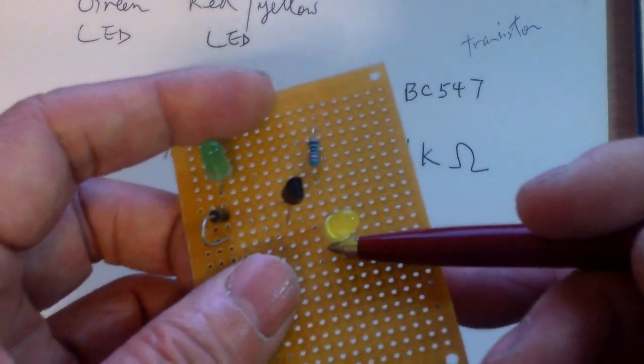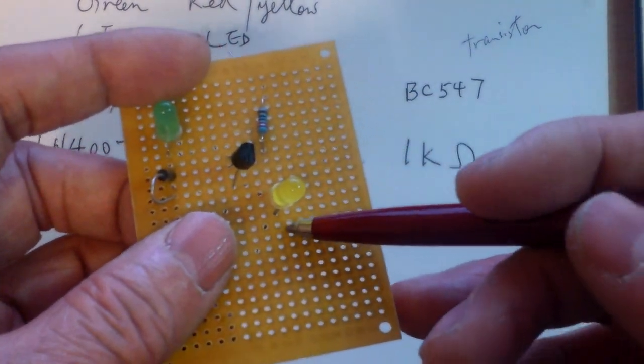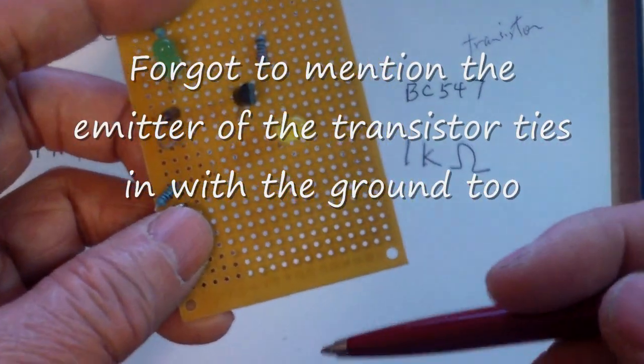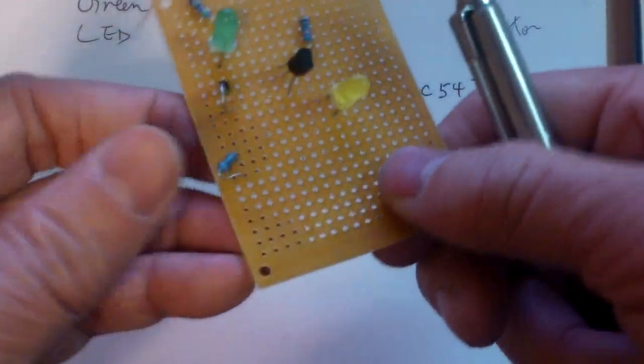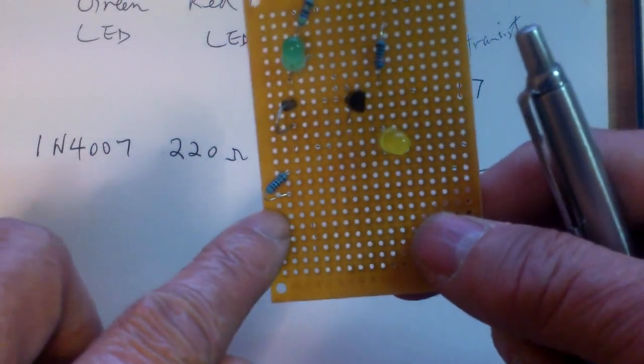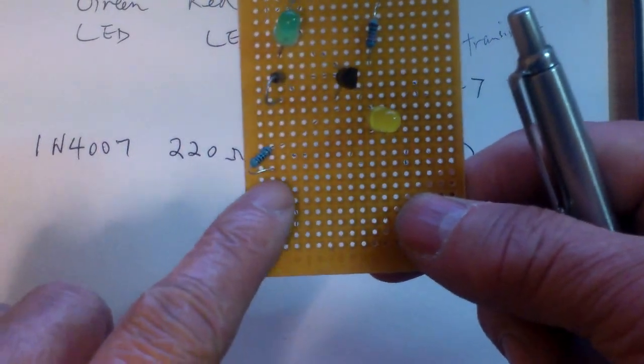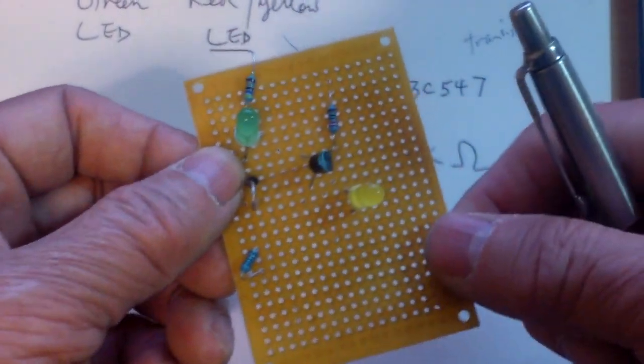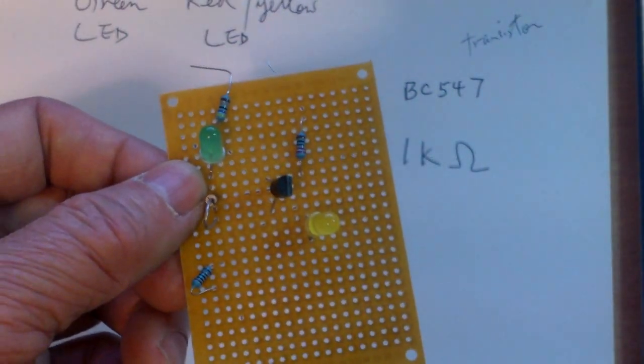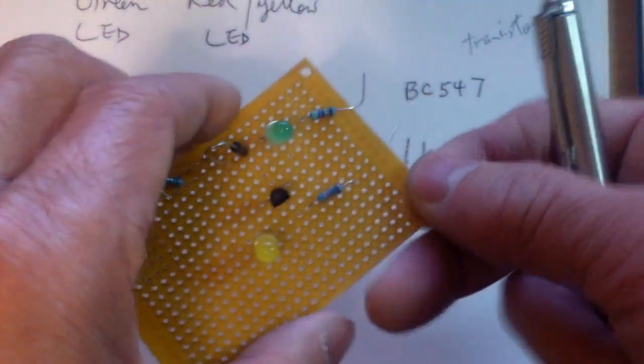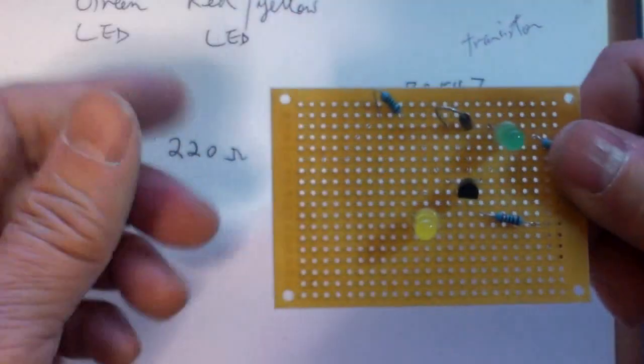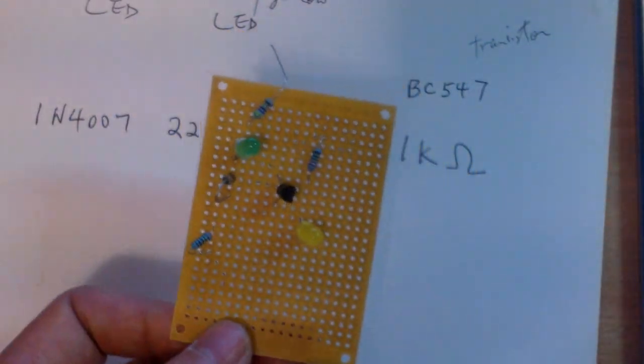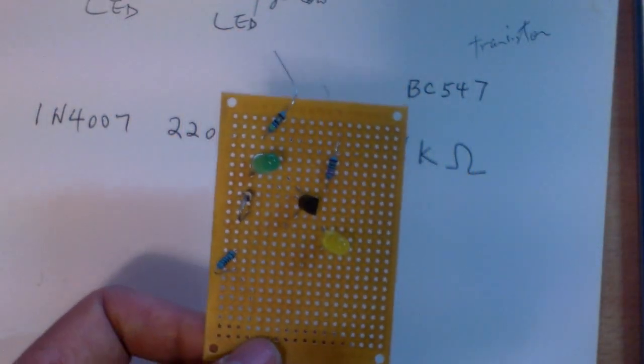And then the negative of the LED goes to your negative. And then it is tied in with the negative rail with this resistor here to form the negative. And that's it. That's all you have to do. Tie in the positive, tie in the negative. And that's your circuit for your battery monitor.